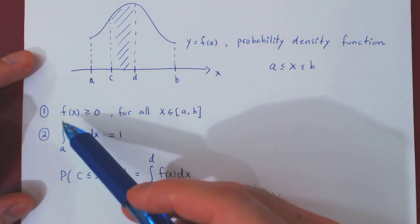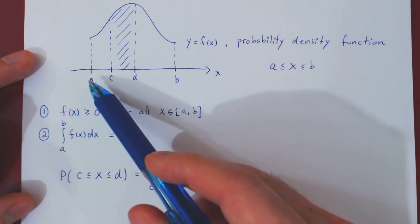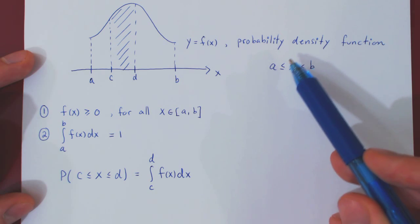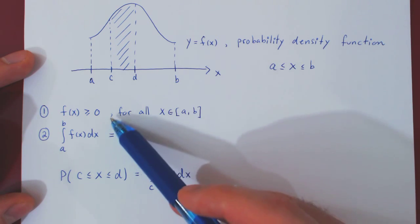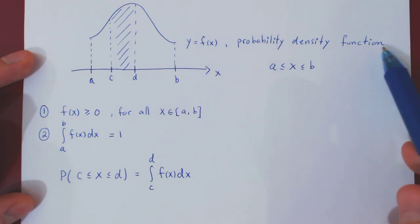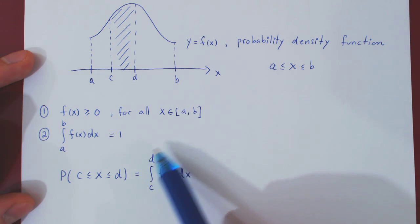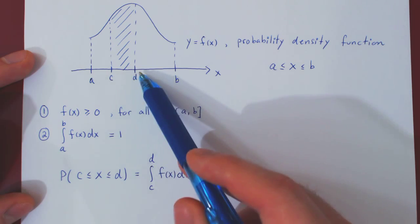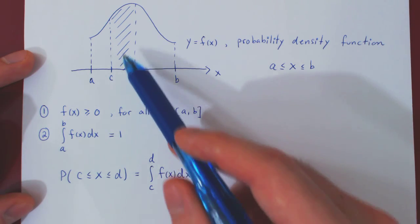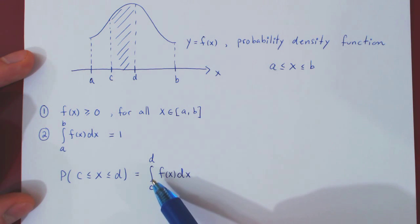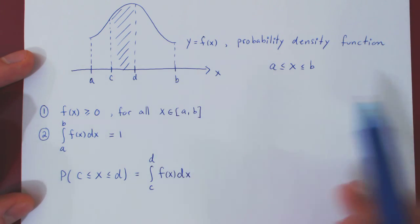Once you prove that a given function on a given interval is a probability density function for a given random variable — once you have proved that f(x) satisfies these two conditions — you can use the density function to find probabilities that x is between two real values, simply by computing the area below the density function, which is given by the definite integral of the probability density function over the given interval.